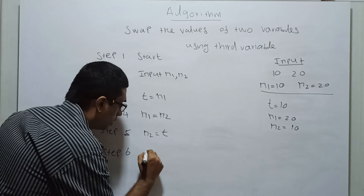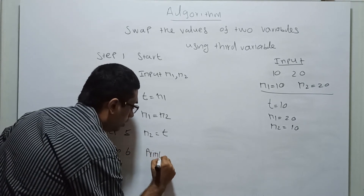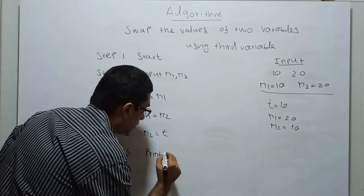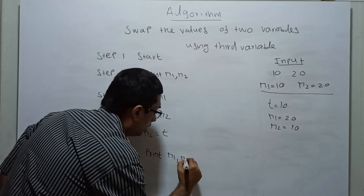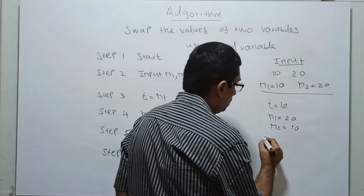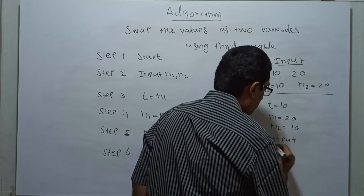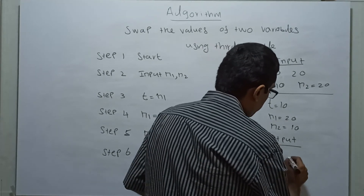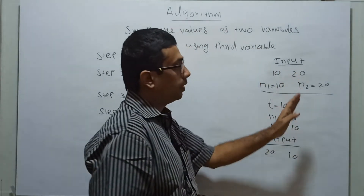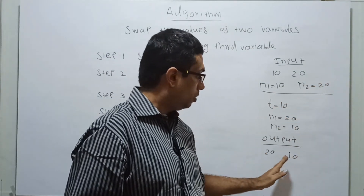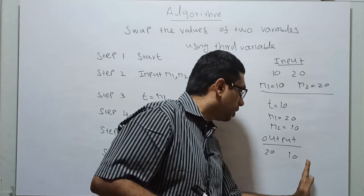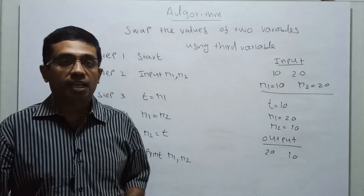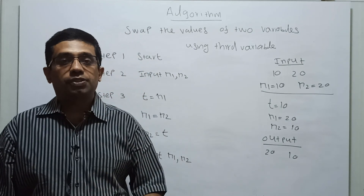Step 6: Print n1 and n2. The output is n1=20 and n2=10 — the values have been successfully swapped. That's it for this video lecture. If you'd like to subscribe to my channel, please do so. Thanks for watching.